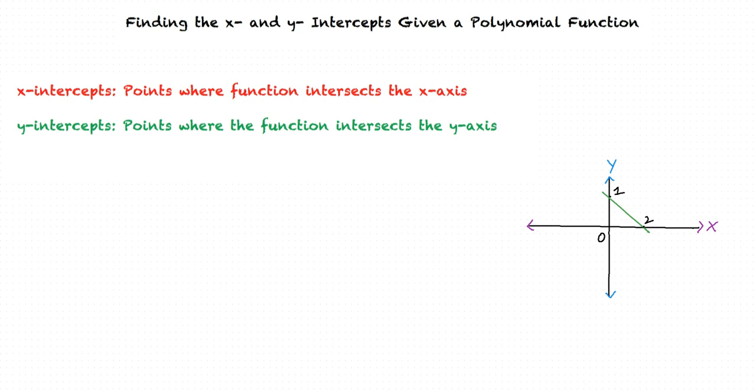We can see that the y-coordinate of point 2 is 0, thus in the case of x-intercepts the value of y would be 0. Similarly, at points where a function would intersect the y-axis, that is, in the case of y-intercepts, the value of x would be 0.